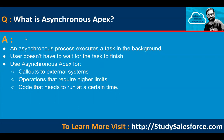The first question is: what is Asynchronous Apex? The answer is: an asynchronous process executes a task in the background. The user doesn't have to wait for the task to finish. Use Asynchronous Apex for callouts to external systems, operations that require higher limits, and code that needs to run at a certain time.